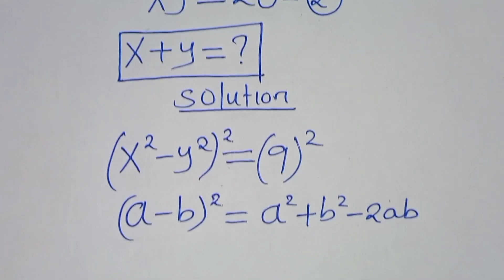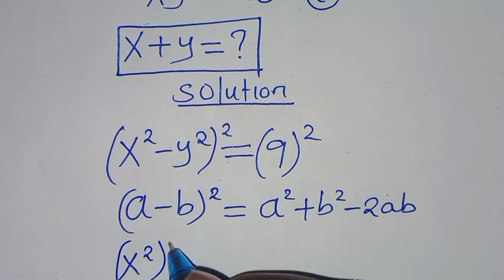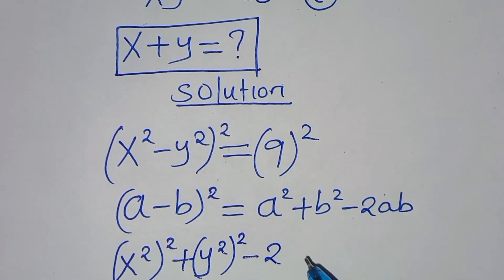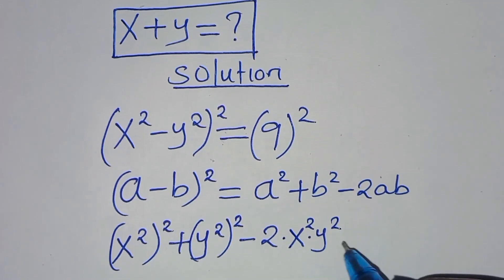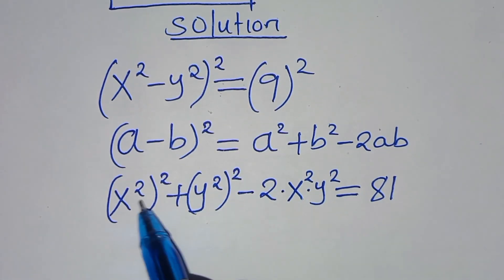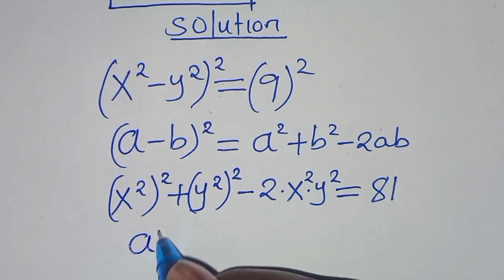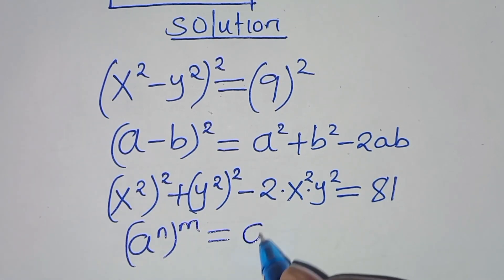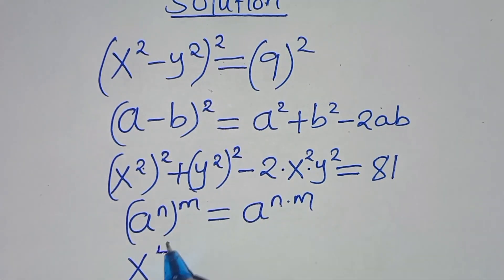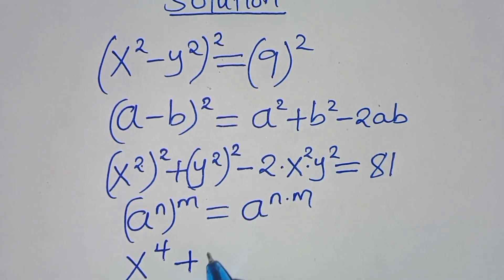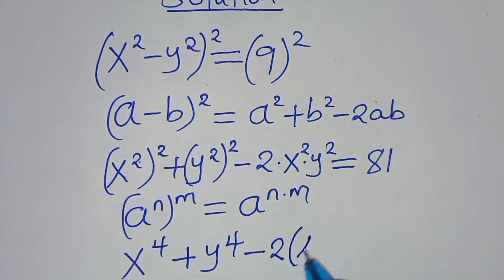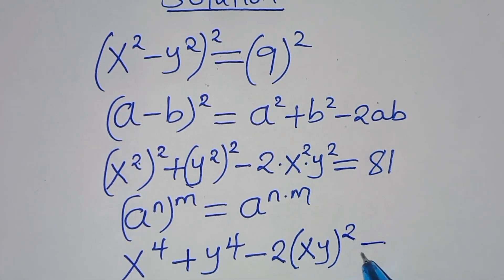Applying this algebraic identity, we have x to the power 2 raised to power 2, plus y to the power 2 raised to power 2, minus 2 times x squared times y squared, equals 9 squared, which is 81. Using the exponent property that a to power n raised to power m equals a to power n times m, this becomes x to the power 4, plus y to the power 4, minus 2 times (xy) squared, equals 81.